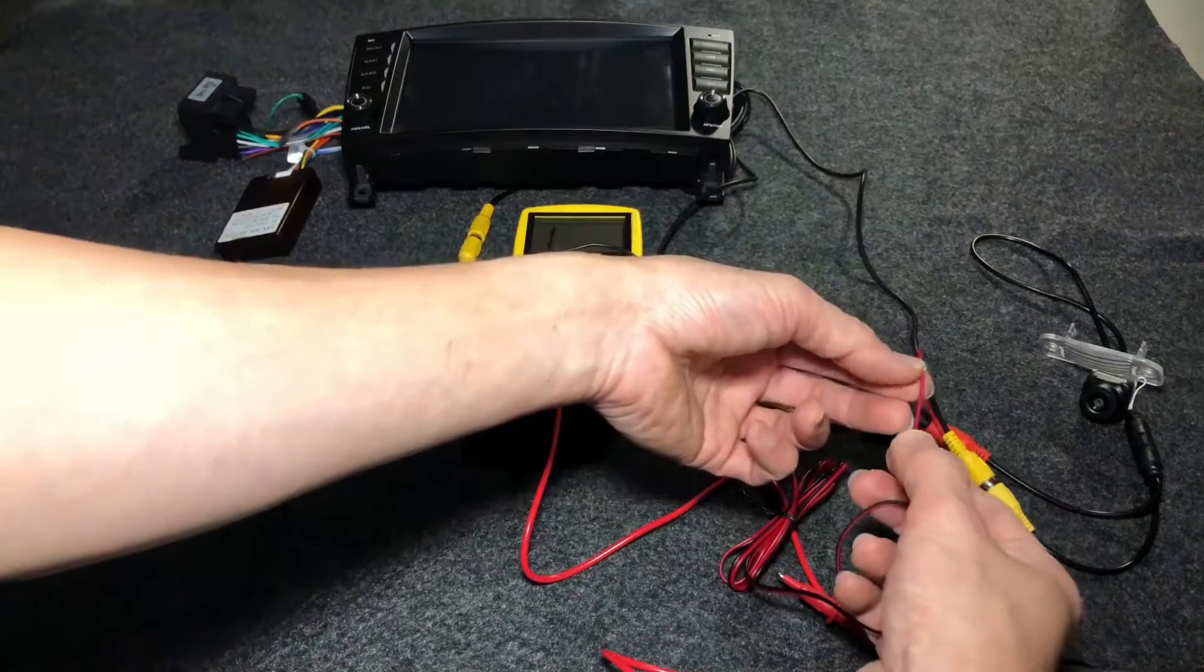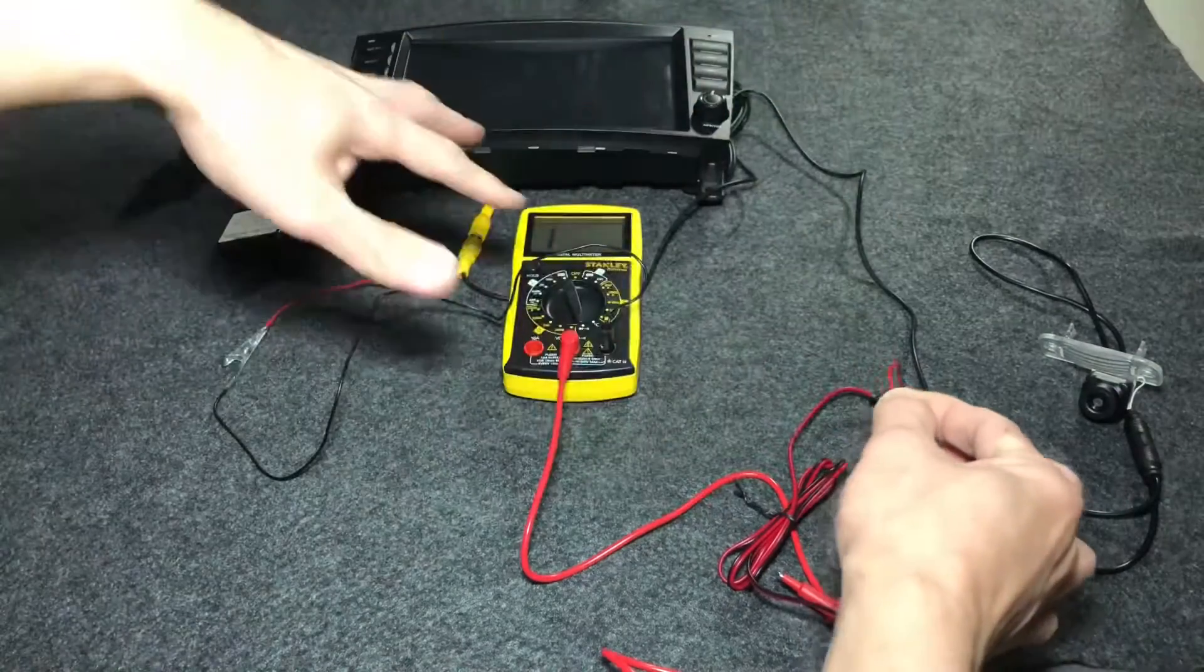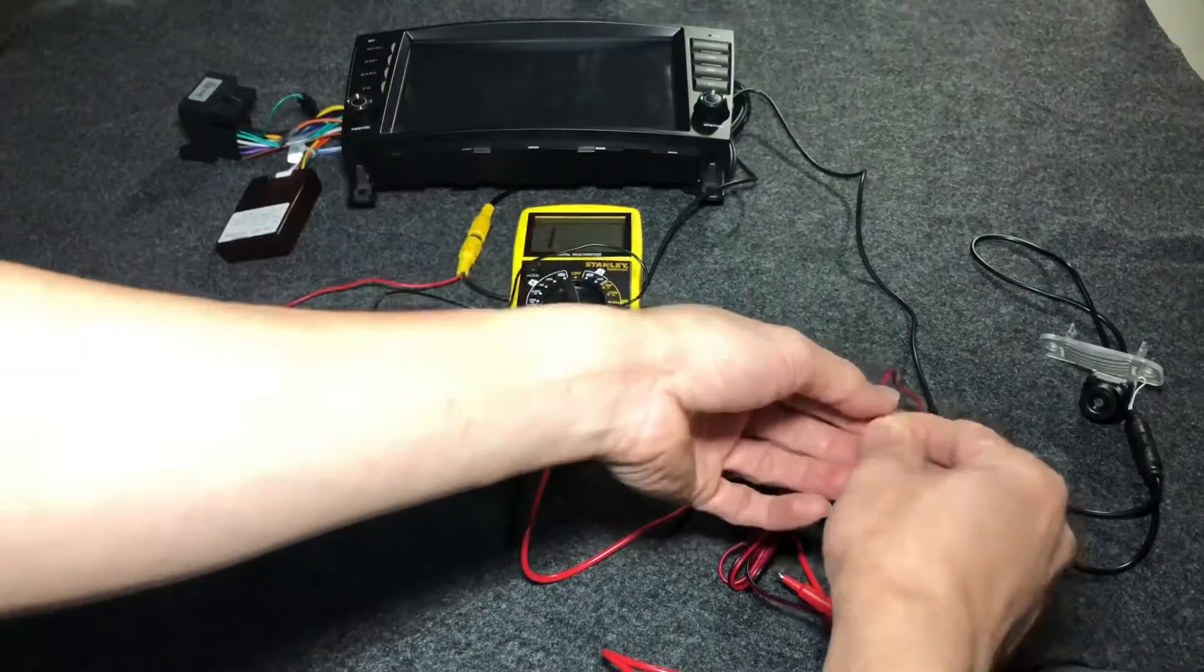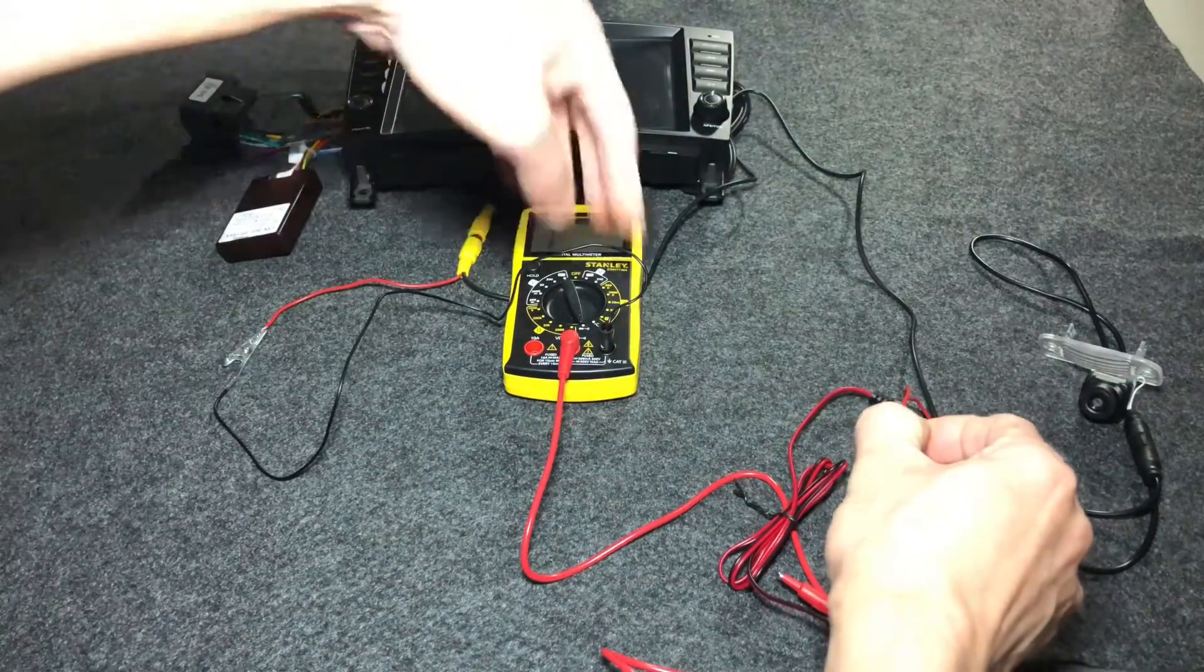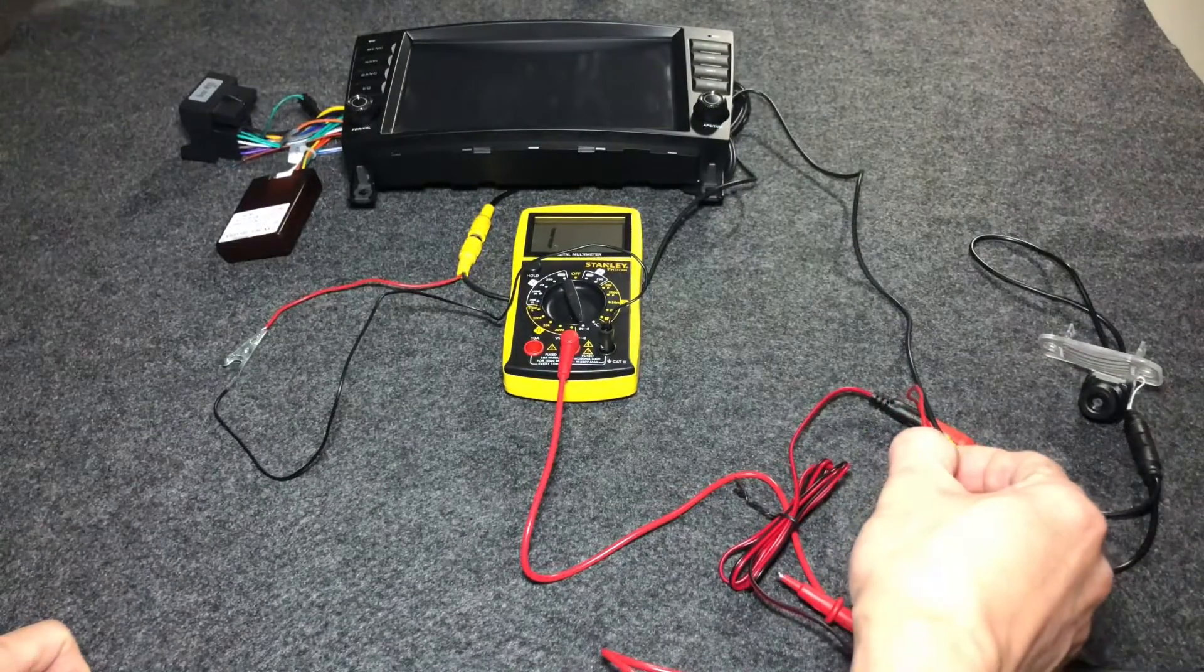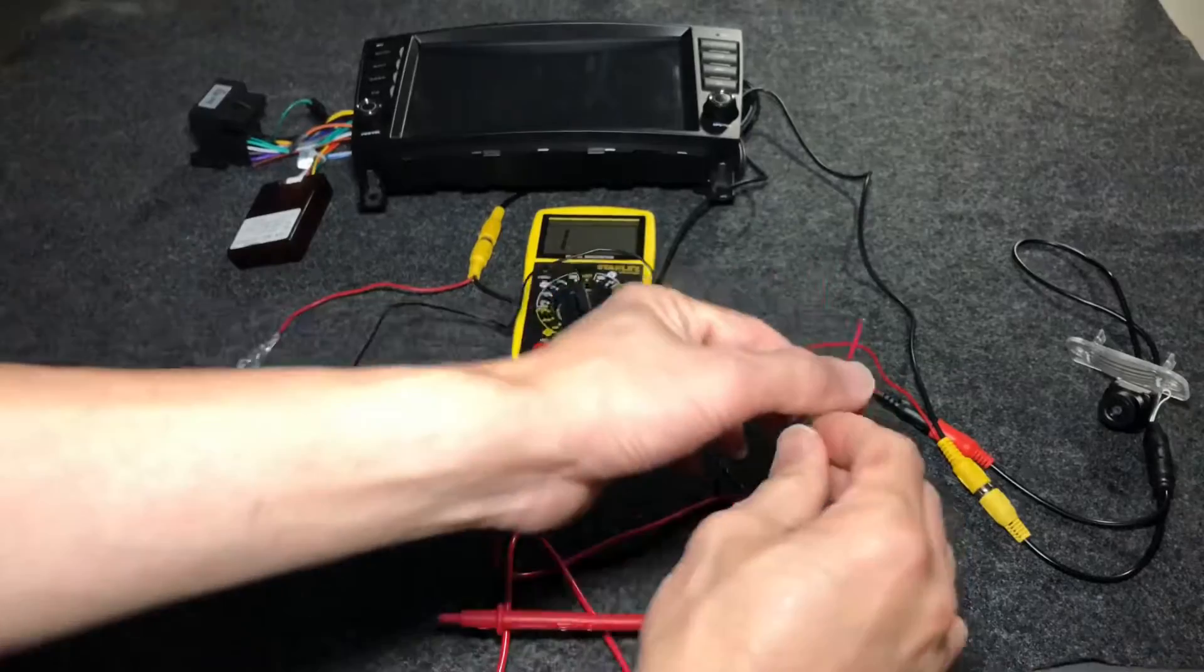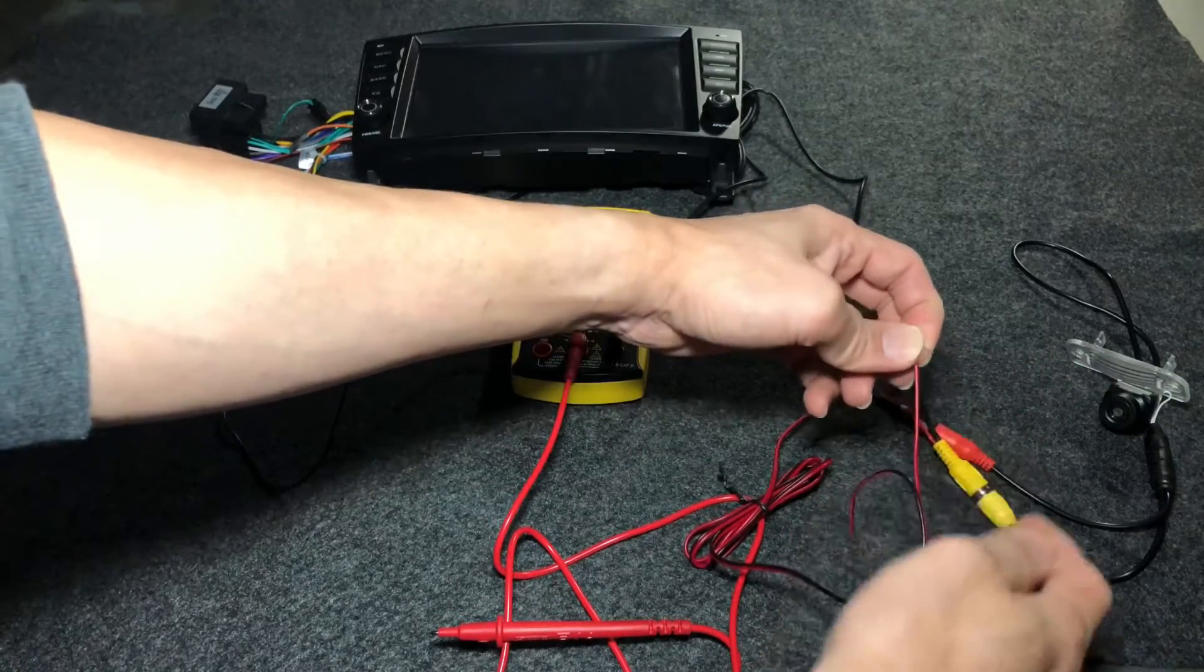At least you have a completely isolated system and use the head unit to fully power the reverse camera. And of course, once you connected this to the 12 volt power output coming out of the head unit, you ground these black wire to a grounding point.